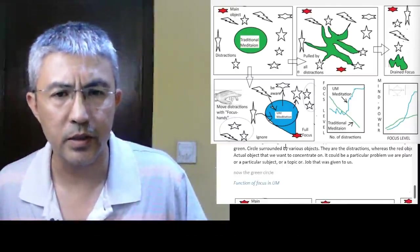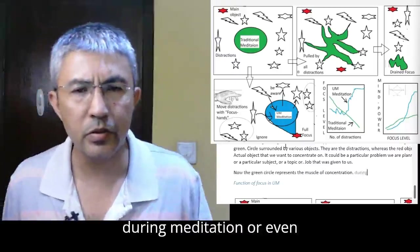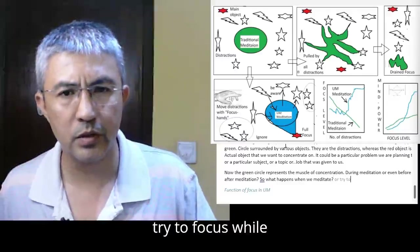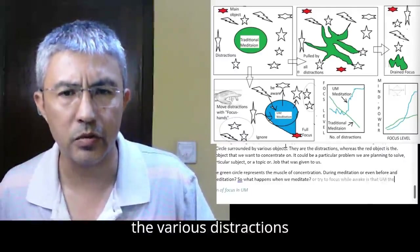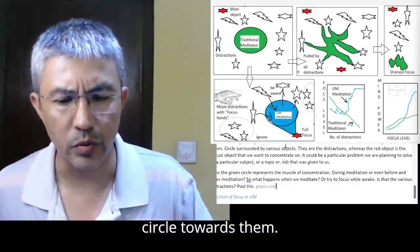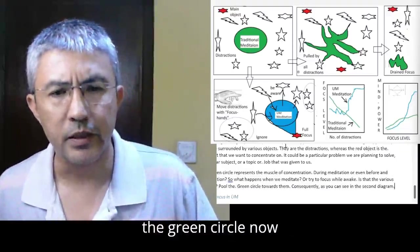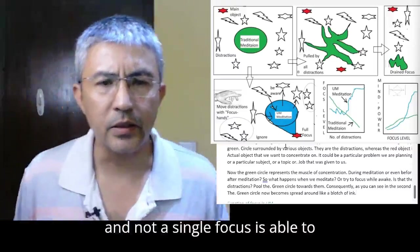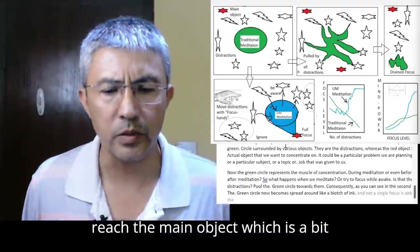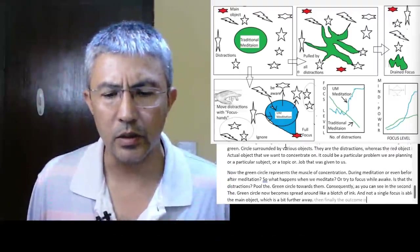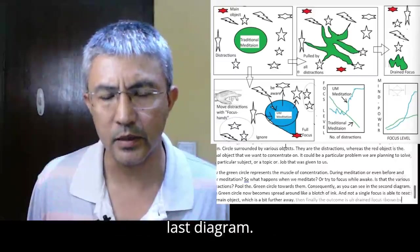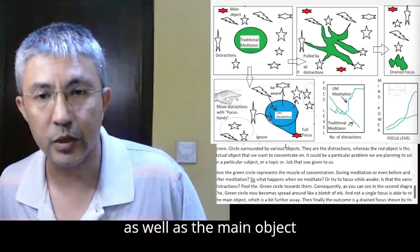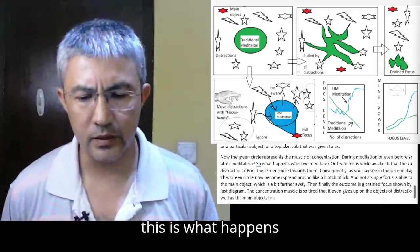In the first diagram, you'll see a green circle surrounded by various objects. They are the distractions, whereas the red object is the actual object that we want to concentrate on. The green circle represents the muscle of concentration. The various distractions pull the green circle towards them, and the concentration muscle becomes spread around like a blotch of ink.